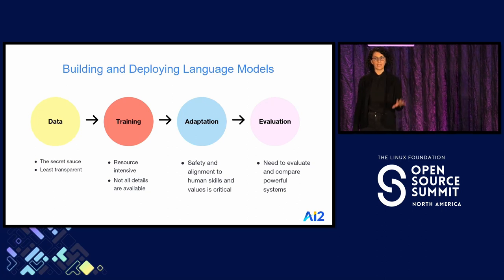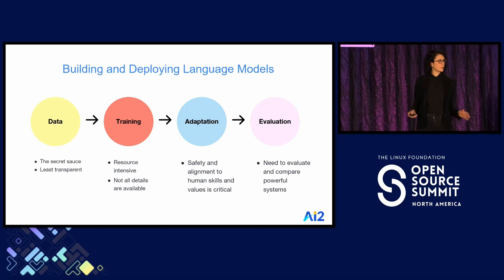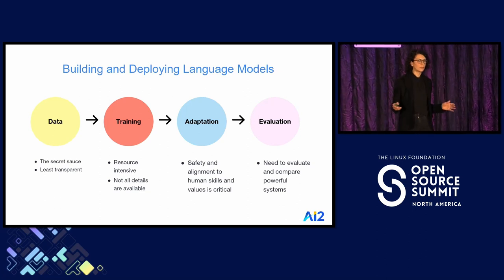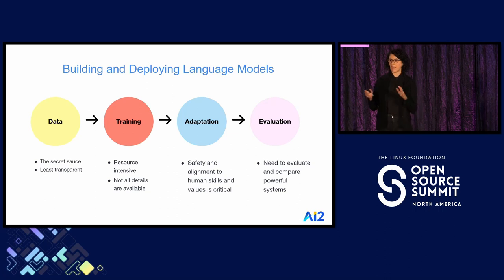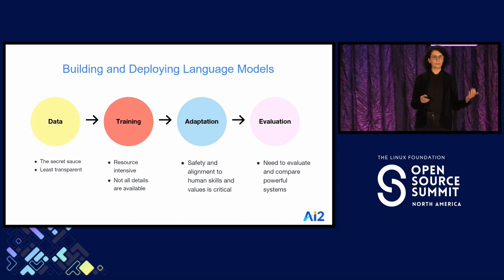The second step is training, where you actually take the data and build those model weights that everybody is talking about. This is the most resource-intensive, and it's very hard for a lot of companies and institutes to do this step. Unfortunately, not a lot of details from even open-source models are available for their training stages. The next step is adaptation — the base model at the end of training is not ready to follow human instructions and is not safe. Through this step, we take this base model and adapt and align it with human intent. The final step is evaluation, which we do throughout the whole process to make modeling decisions and then finally evaluate our model capabilities.